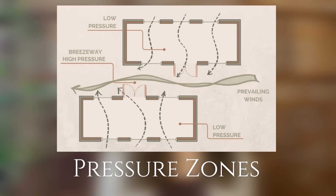Passive cooling tip number one is moving air. This is a big topic and it all starts with pressure zones. They're massively important in how air moves within and around a building.